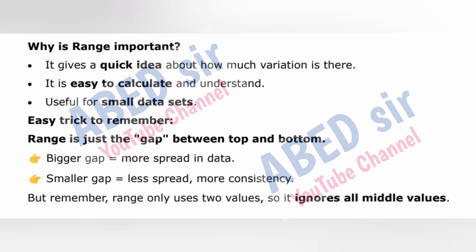Why is range important? It gives a quick idea about how much variation there is. It is easy to calculate and understand, and useful for small data sets. Easy trick to remember: range is just the gap between top and bottom. Bigger gap equals more spread in data; smaller gap equals less spread, more consistency. But remember, range only uses two values, so it ignores all middle values.